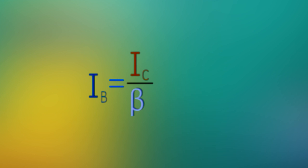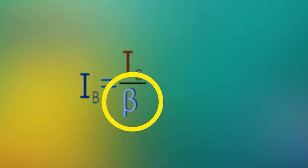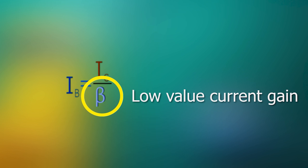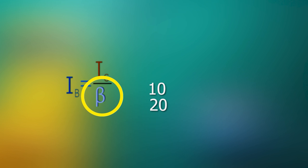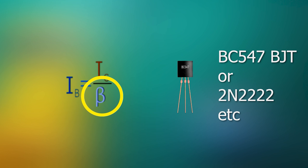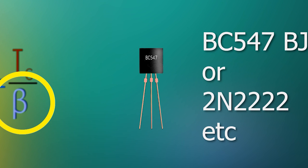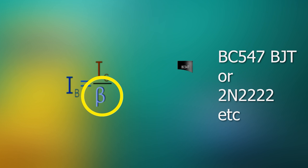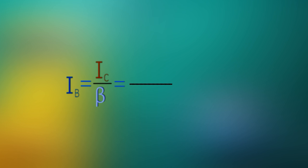The step 2 is to find base current. IB is equal to collector current IC divided by current gain beta. Here current gain is not a very important factor while designing a switch. So you can safely use low value for beta, something like 10 or 20 for small signal transistors like BC547 BJT. This is because we want to heavily saturate the transistor allowing maximum collector current. So IB is equal to IC which is 12.5 milliamperes divided by, let's take current gain of 10. We get a base current of 1.25 milliamperes.